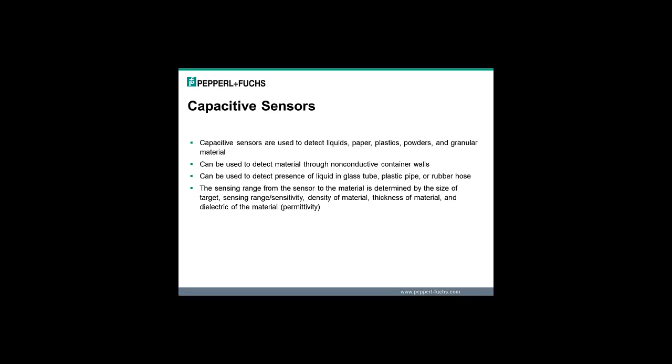They can be used to detect liquid material through non-conductive container walls. They can also detect liquid in a glass tube, plastic pipe, or rubber hose. The sensing range from the sensor to the material is determined by the size of the target, the sensitivity, density of the material, thickness of the material, and dielectric of the material.